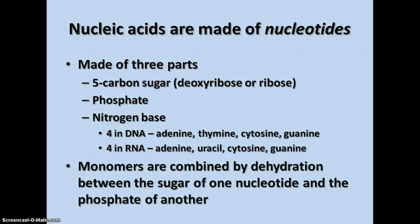There are four nitrogen bases in DNA: adenine, thymine, cytosine, and guanine. And four in RNA: adenine, uracil, cytosine, and guanine.